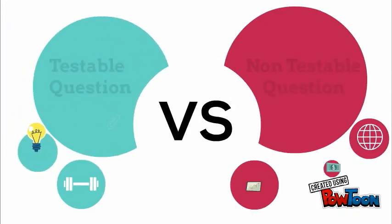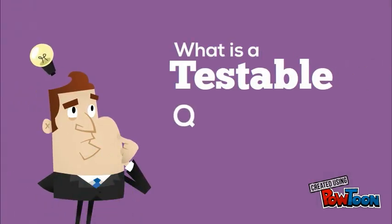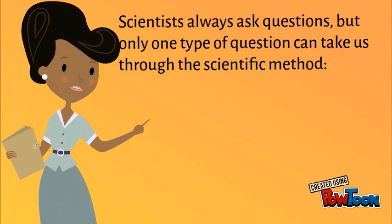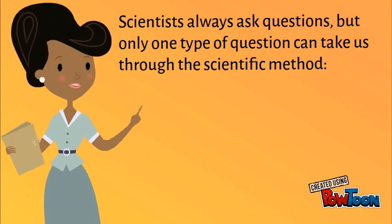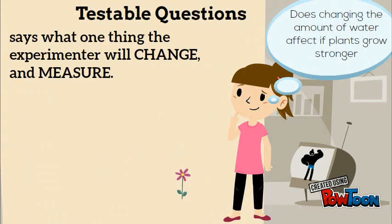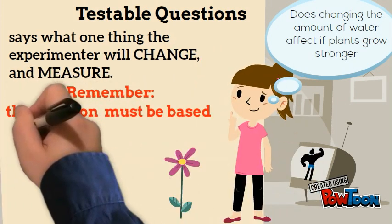Today we're going to be revealing testable and non-testable questions. Scientists always ask questions, but only one type of question can take us through the scientific method, and that is testable ones! Testable questions say what one thing the experiment will change and measure. Remember, the testable question must be based on fact, not opinion.